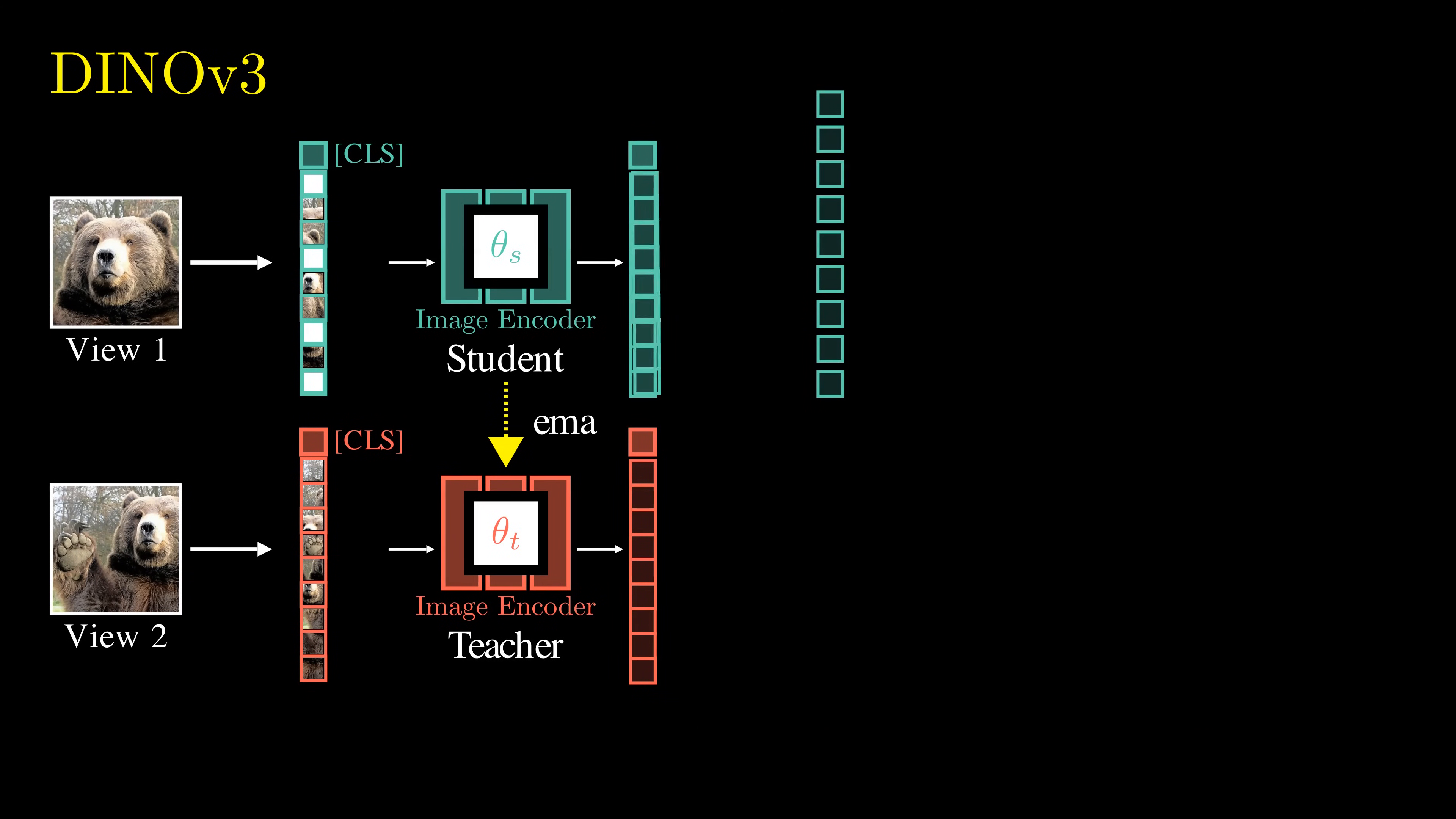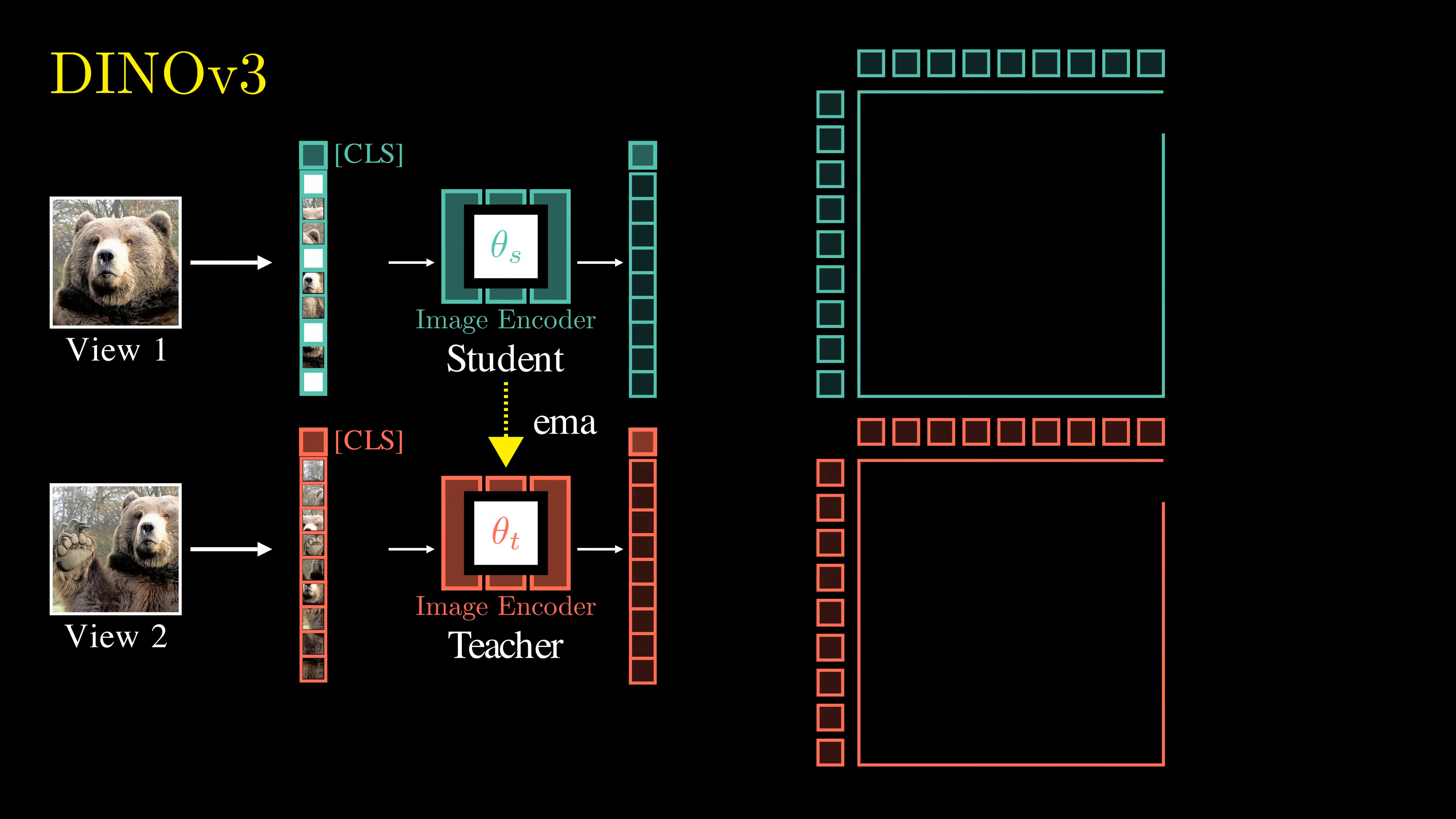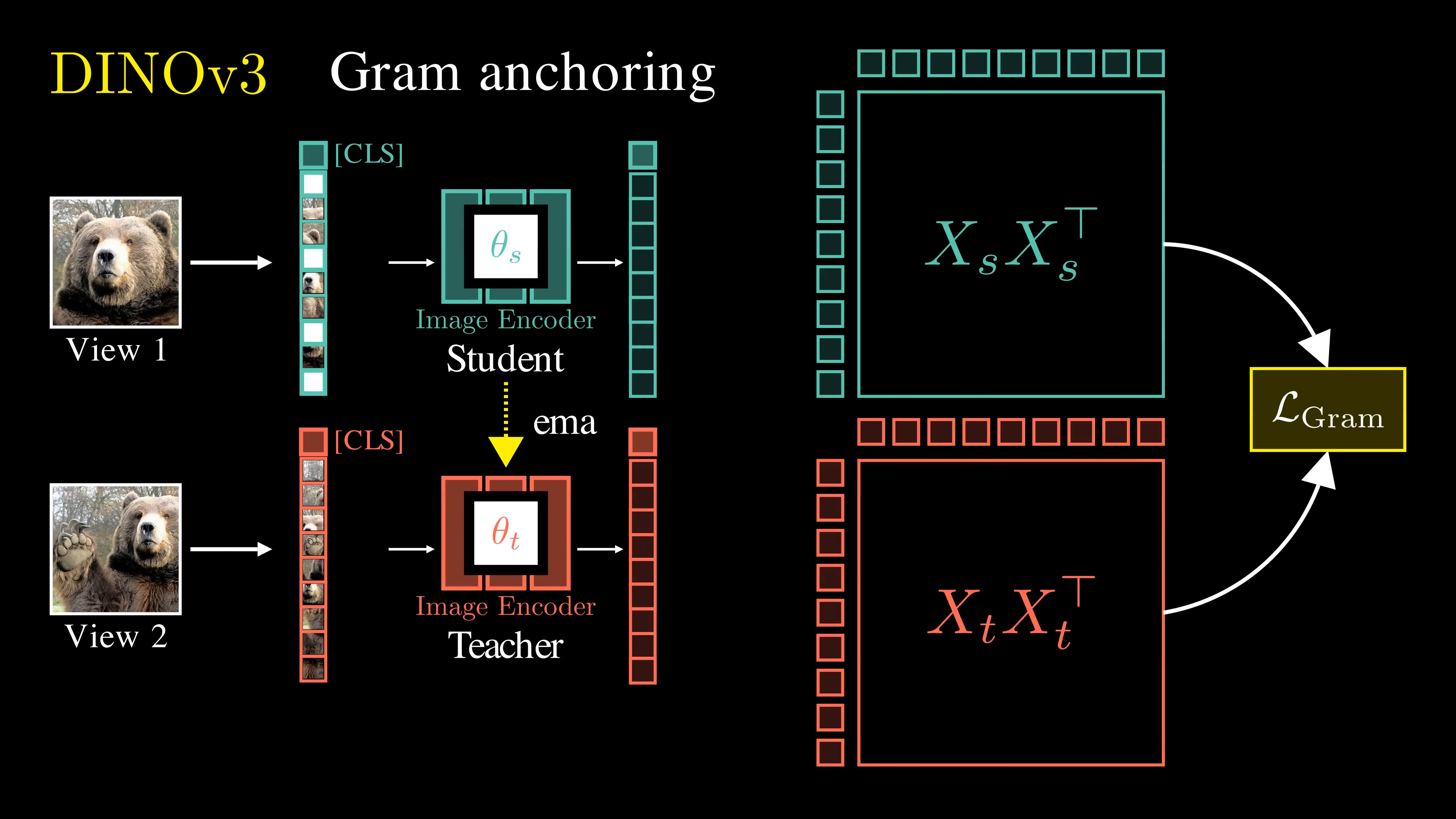DINO v3 used a previous version of the teacher model to regularize the correlations between all patch pairs. More specifically, we compute the cosine similarity between all pairs of patch token embeddings. This is called a gram matrix. We add a loss that encourages the student model's gram matrix to closely match that of the teacher model. This trick is called gram anchoring. These regularizations preserve the spatial relationship between local patches, while still enabling the student's features to be refined during training. In practice, we use a teacher model checkpoint at 200,000 steps. The teacher model processes higher resolution images to extract more detailed features. Afterward, the resulting gram matrix is resized to match the dimensions of the student model's gram matrix.